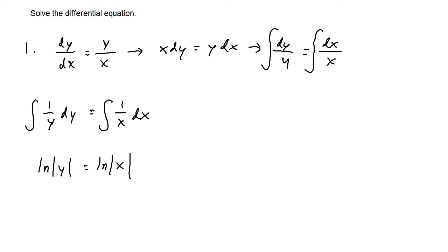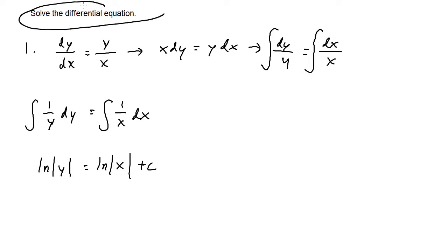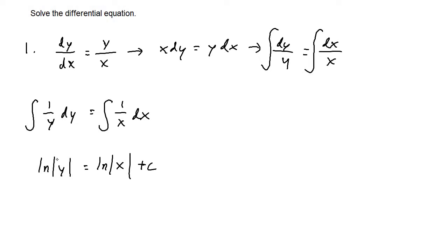Because we integrated, we do have to add plus c. We only need to add plus c to one side — it's better to add it on the side that has the x variable. So we have ln|y| equals ln|x| plus c. Solving the differential equation means solving for y, so we're going to isolate y.